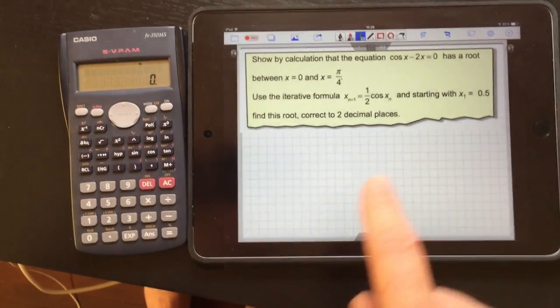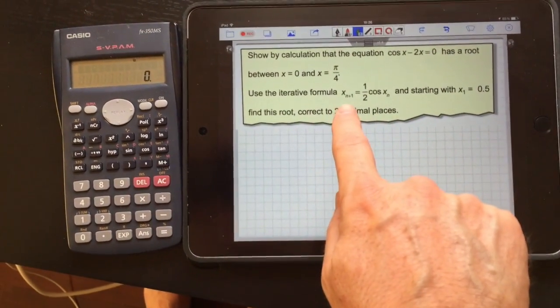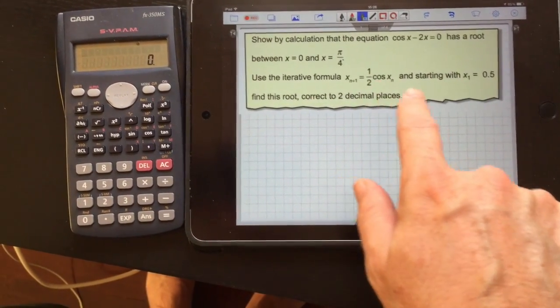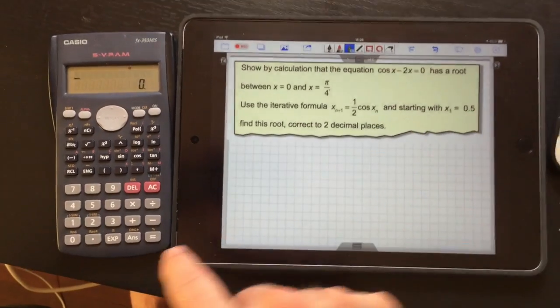Okay, if we want to use the iteration formula, x_n+1 is equal to 1/2 cos(x_n), and the starting value of x_1 is equal to 0.5.